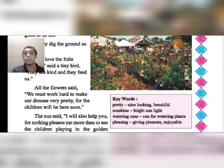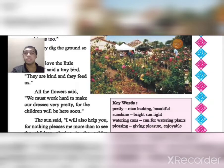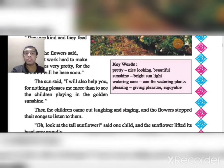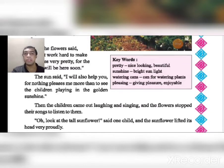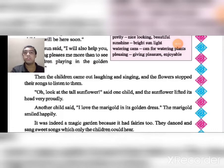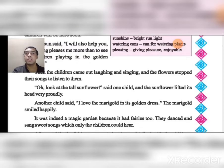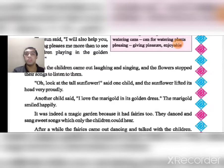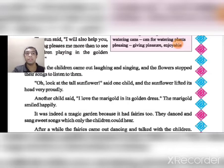All the flowers said, 'We must work hard to make our dresses very pretty for the children. We will be here soon.' The sun said, 'I will also help you, for nothing pleases me more than to see the little children playing in the golden sunshine.' Then the children came out laughing and singing, and the flowers stopped their song to listen to them. One child pointed to the tall sunflower, and the sunflower lifted his head very proudly.